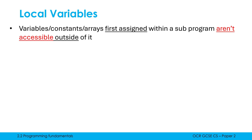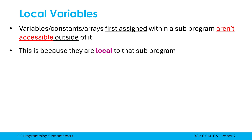Here is a definition for a local variable — which, misleadingly, we only really ever talk about variables, but this also applies to constants and arrays as well. Variables, constants, or arrays first assigned within a subprogram aren't accessible outside of it. That is because they are said to be local to that subprogram. A local variable is first assigned within a subprogram, and being local means it is not accessible outside of that subprogram.